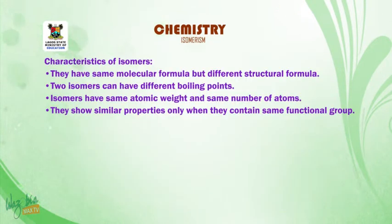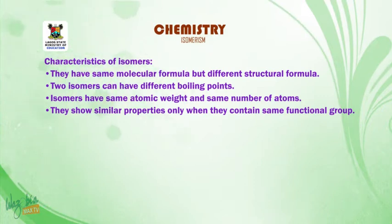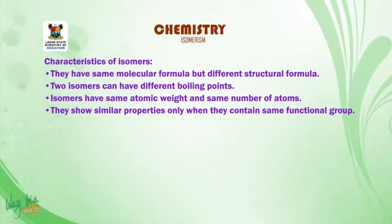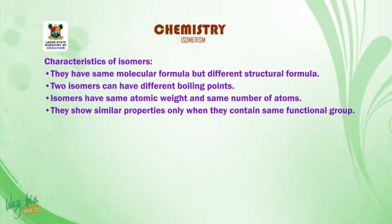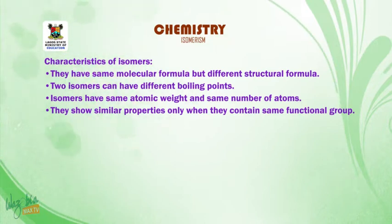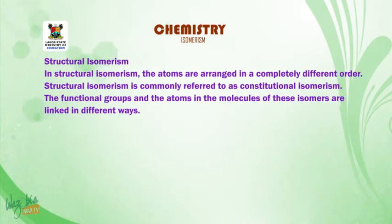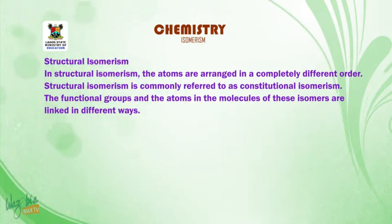Characteristics of isomers: one, they have the same molecular formula but different structural formula; two, two isomers can have different boiling points; three, isomers have the same atomic weight and same number of atoms; four, they show similar properties only when they contain the same functional group. In structural isomerism, the atoms are arranged in a completely different order.